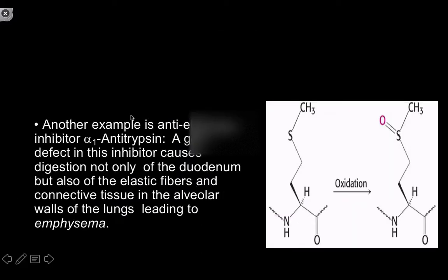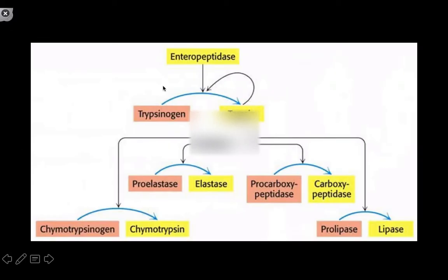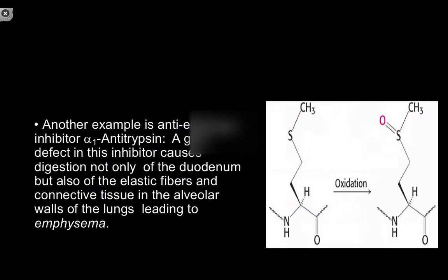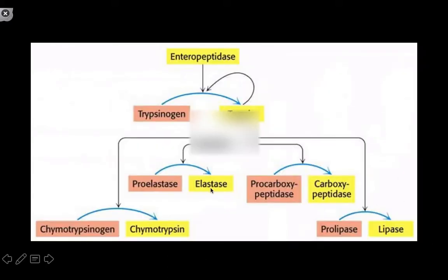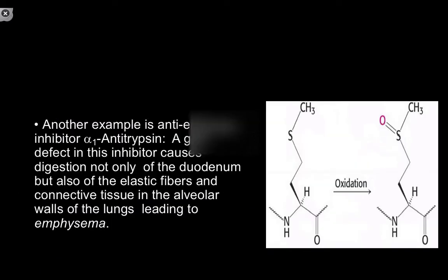For example, trypsin plays a role in converting proelastase to elastase, and elastase plays a large role in maintaining connective tissue properties. But if you over-activate elastase, you'll end up getting destruction of connective tissue. In people who have a genetic defect lacking that inhibitor, or who are smokers and oxidize their inhibitor so it can't bind with that negative 75 kJ/mol binding energy, elastase remains in the active state longer than it should. That results in degradation of lung tissue, leading to emphysema. Smoking is bad, kids.